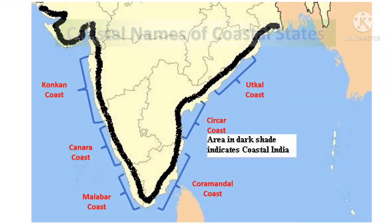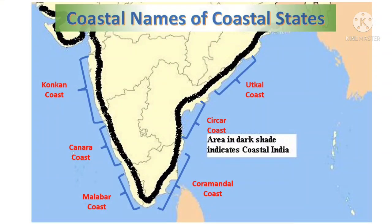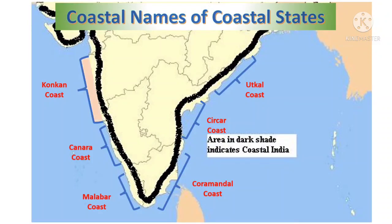The coastal names of the coastal states are as follows: Maharashtra and Goa — Konkan coast; Karnataka — Kanara coast; Kerala — Malabar coast; Tamil Nadu — Coromandel coast; Andhra Pradesh — Sarkar coast; Odisha — Utkal coast.